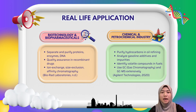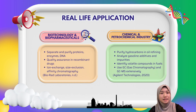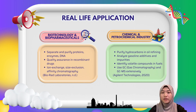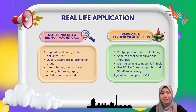The fourth application is the chemical and petrochemical industry. In the chemical and oil industry, chromatography is used to purify hydrocarbons and analyze gas additives in fuels. It can detect impurities and volatile organic compounds in products like gasoline. Gas chromatography (GC) and GC-MS are the go-to techniques, especially during oil refining and fuel quality testing.